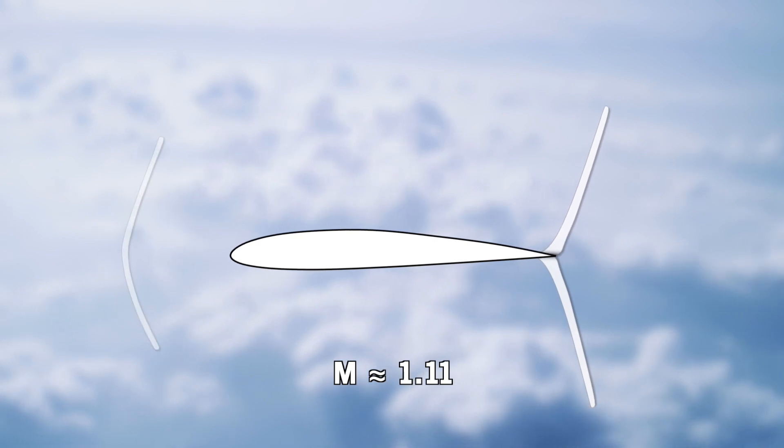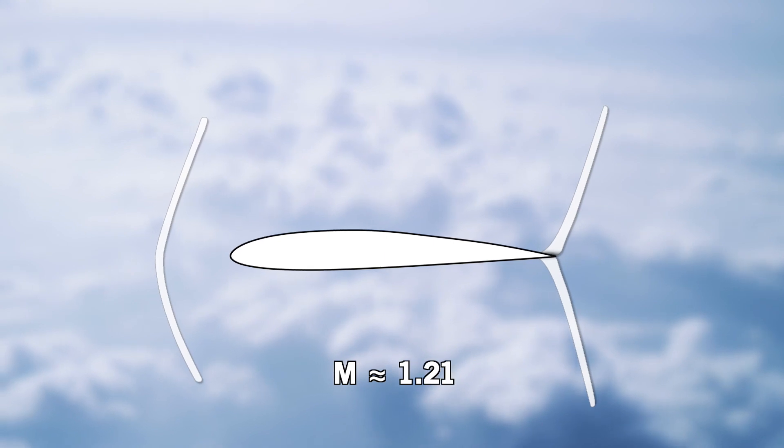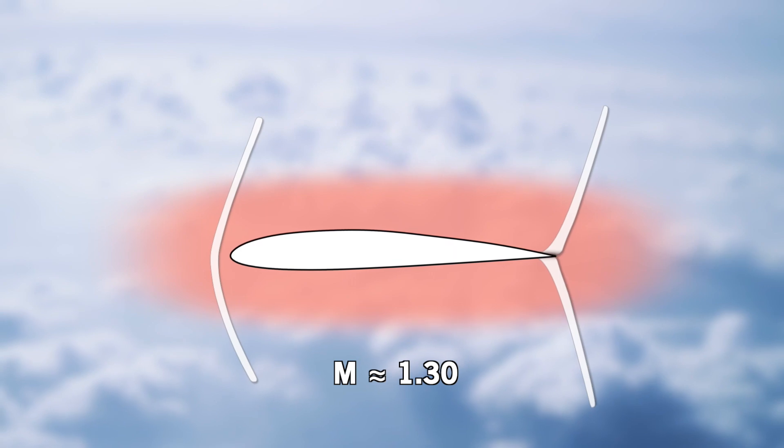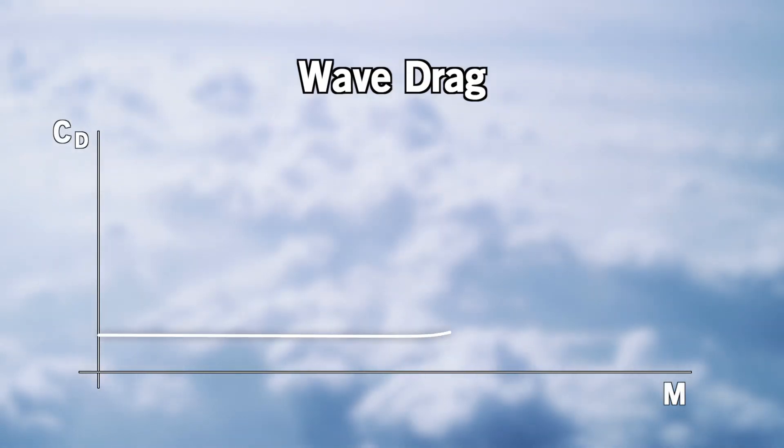If we continue increasing the airspeed, another shockwave appears in front of the airfoil, until it is attached to the leading edge. Once they come together, the airflow is supersonic everywhere. Shockwaves also produce another type of drag, called wave drag, whose effect can be seen in this graph.